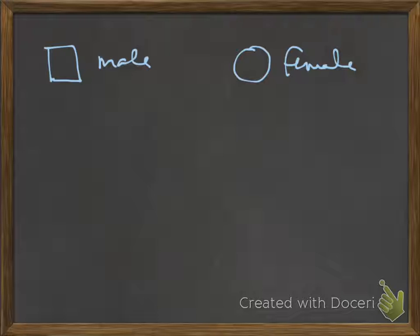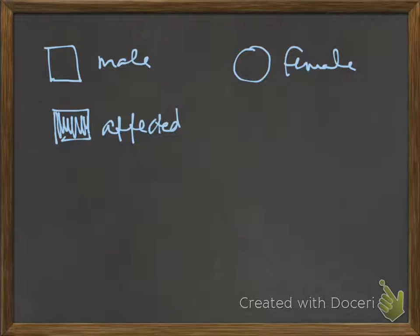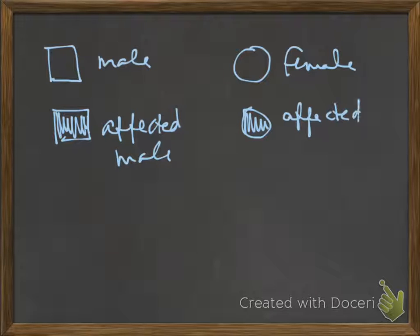For every pedigree, we are looking at some trait, some characteristic, often a disease. Within that framework, we color in the square for an affected male and we color in the circle for an affected female.